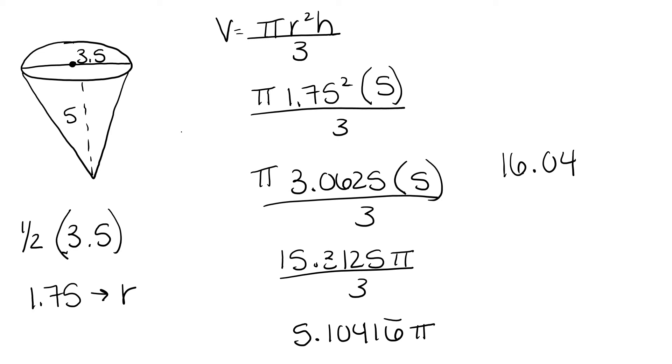The directions tell us to round to the nearest tenth. Zero is in the tenths place, the four rounds down, and so we end up with 16.0.